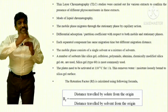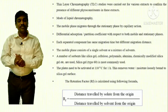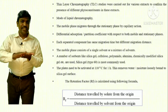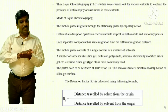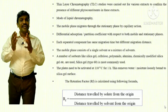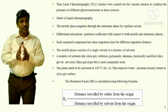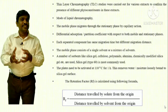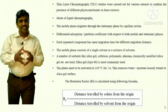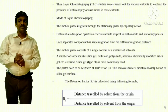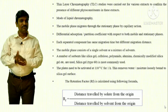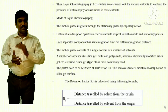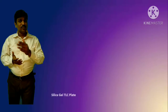Based on affinity, the components get segregated and separated. Nowadays, pre-coated plates are available — silica gel coated on aluminum plates — and they are activated at 110 degrees Celsius for one hour to remove the moisture present on the surface of the silica gel. The retention factor, or RF value, is different for each substance and is calculated as the distance traveled by the solute from the baseline divided by the distance traveled by the solvent from the baseline.